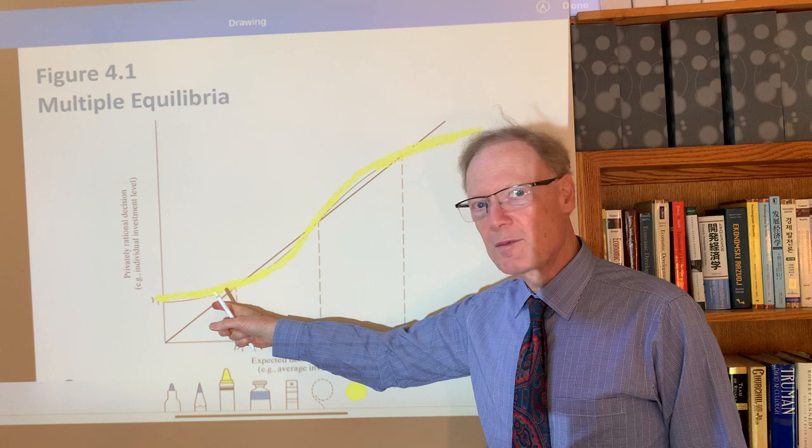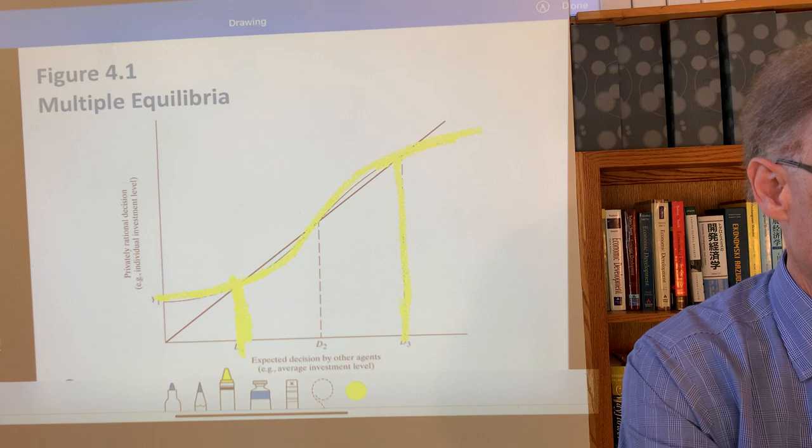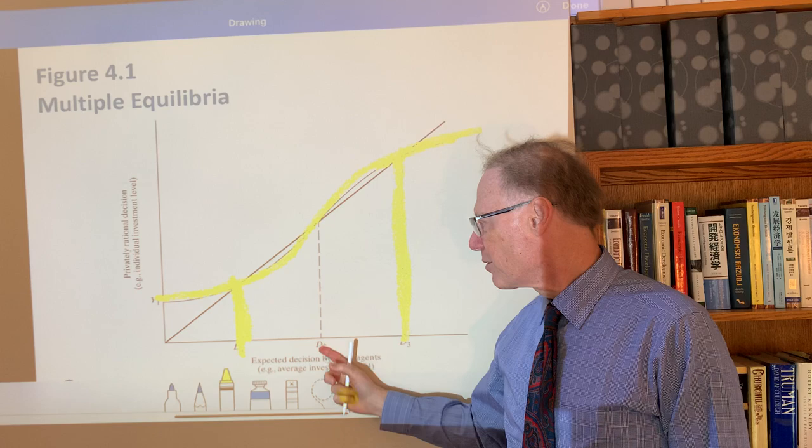So by the same logic that we gave before, that with the reaction function cutting from above, we know that this point labeled D1 and this point labeled D3 are both going to be stable equilibrium.